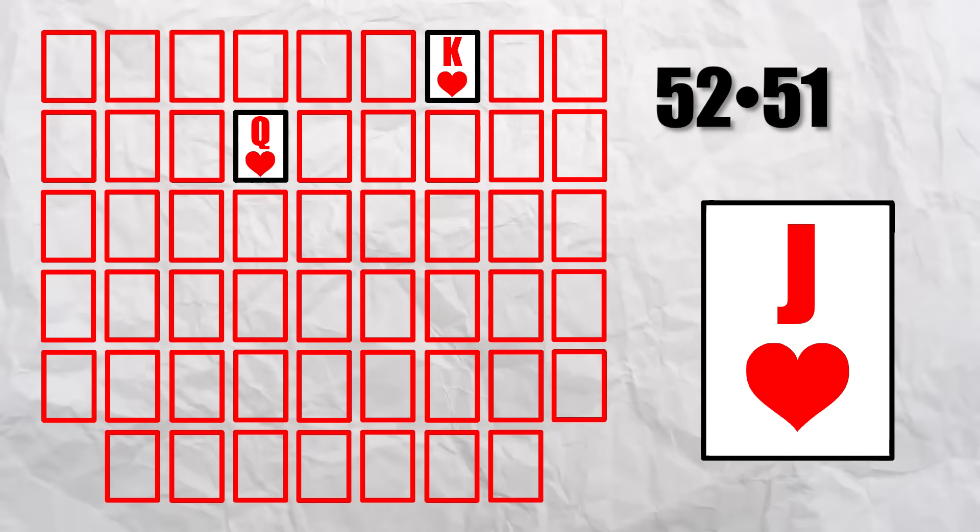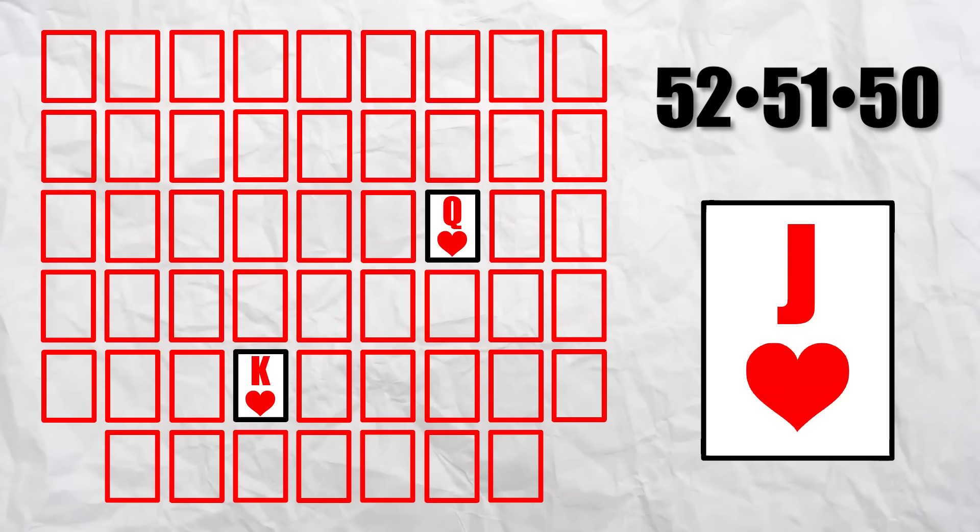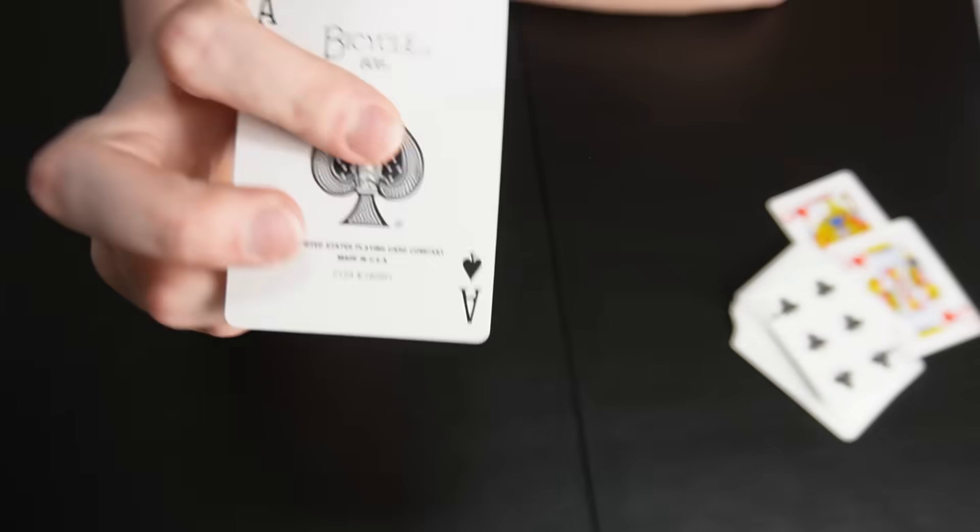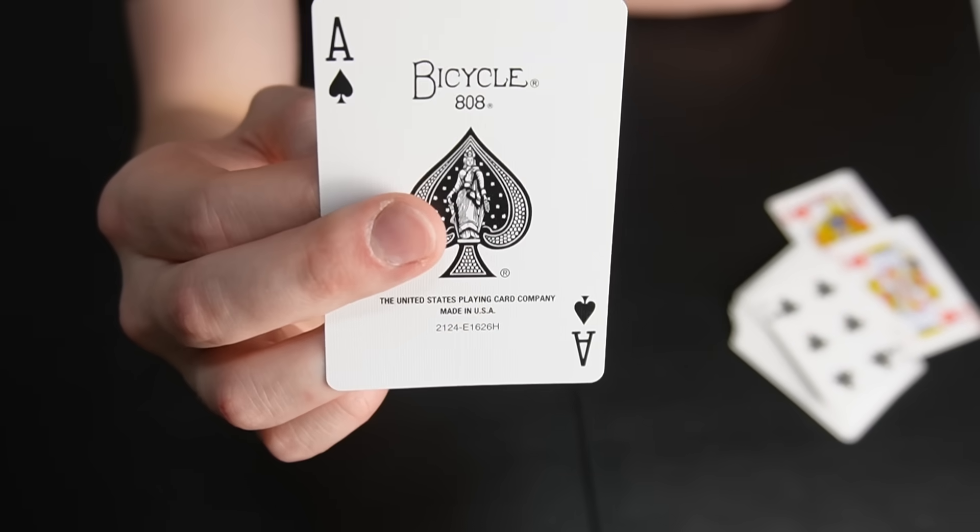For each of these 52 times 51 variations, there are 50 different locations that the Jack of Hearts can be in. And we can continue this process all the way down to the Ace of Spades.